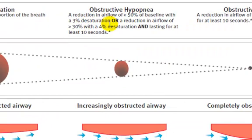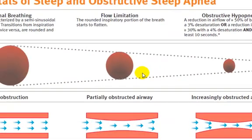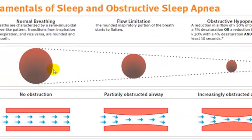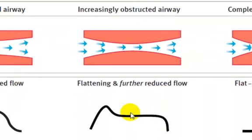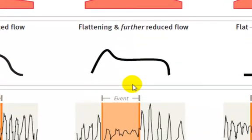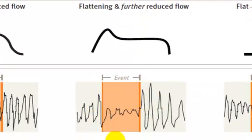Obstructive hypopnea would be a reduction in air flow of 50% or more of baseline with a 3% desaturation, or a reduction of 30% or more with a 4% desaturation, each lasting for at least 10 seconds in duration. You can see the cross-sectional airway is smaller than in flow limitation and substantially smaller than during normal breathing. There is increased obstructed airway, indicated as a partial obstruction. There is further flattening and reduced flow. This is observed in the recording as a reduction in both air flow and respiratory effort.